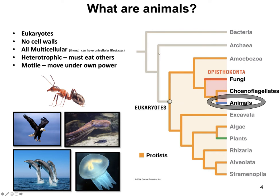If you look at this phylogenetic tree here, it's a very generalized phylogenetic tree. You've got the major domains — bacteria and archaea listed here that are sort of grayed out. Then we've got the eukaryotes here, and these are all eukaryote groups. You can see there are a couple major groups: the fungi, the plants, and of course the animals in blue. All these other orange groups of eukaryotes are considered to be protists. So animals are their own eukaryotic group that sort of breaks out on this tree, closely related to choanoflagellates and the fungi.